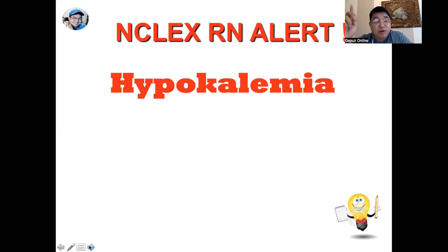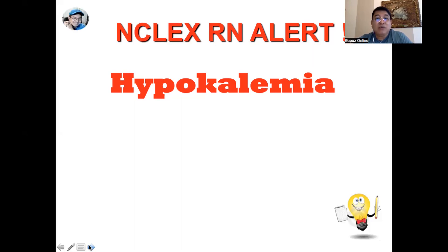What ECG wave will you see in a patient with hypokalemia? An exaggerated U wave. The U wave is considered part of the normal ECG, but an exaggerated U wave is associated with hypokalemia. When a patient has hypokalemia, the priority is to provide oral replacement of potassium, monitor the client's ECG tracing, and most importantly, serial monitoring of the client's potassium level.